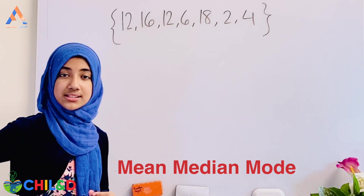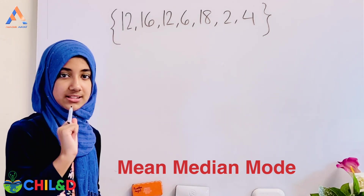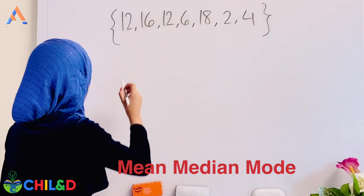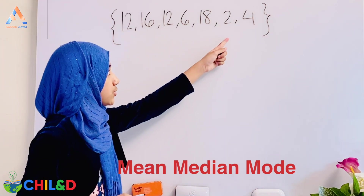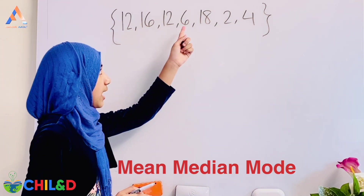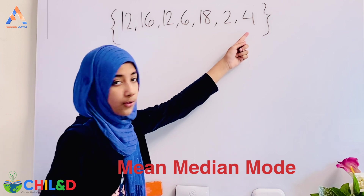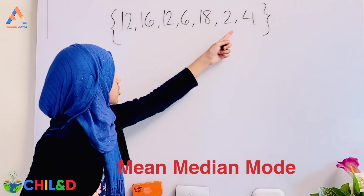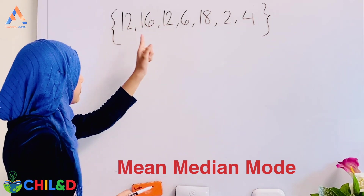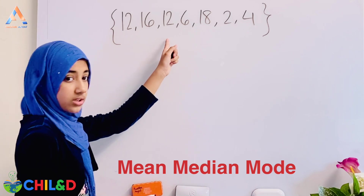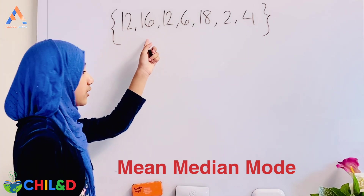Let's find the arithmetic average. 18 plus 2 is 20, and 6 plus 4 is 10, so we have 30 so far. Then 12 plus 12 is 24, and 24 plus 16 is 40.